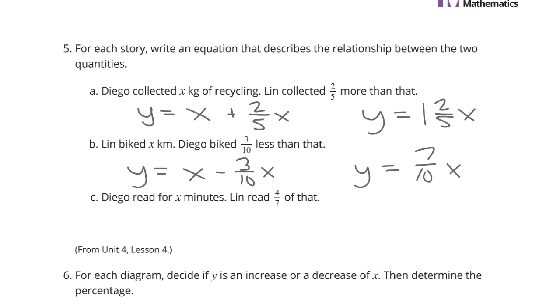Diego read for x minutes. Lynn read 4/7 of that. So, just 4/7 of x.